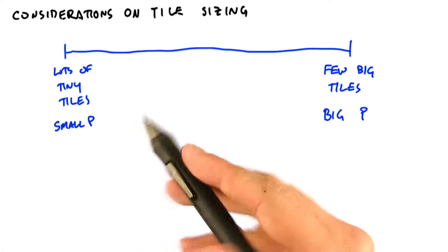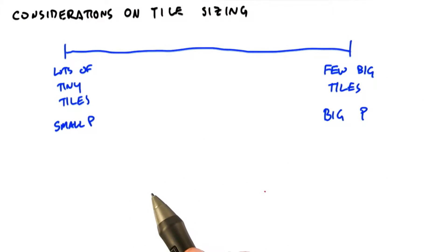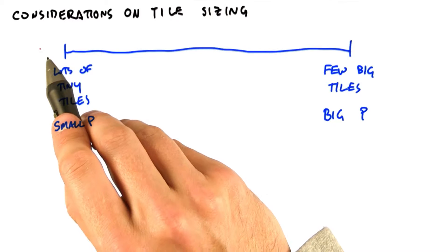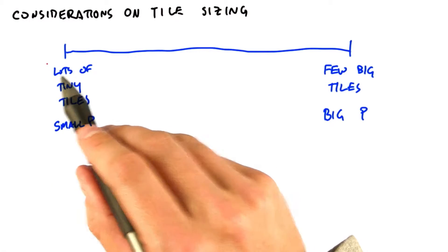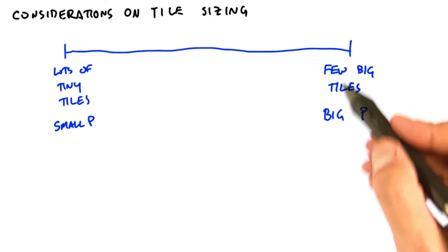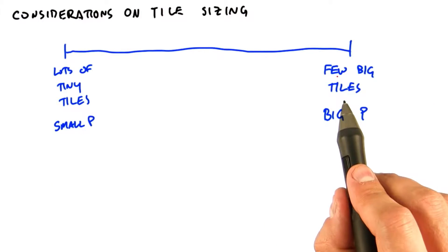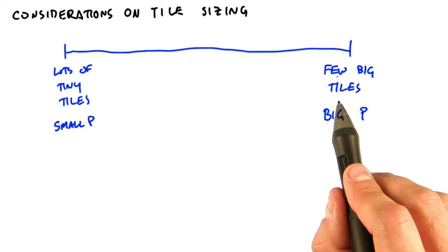In this problem, you need to divide your work up into chunks — in this case, tiles. We have a continuum between tiny tiles, lots of them, and fewer tiles, where each tile is sized to the maximum that can fit in a single thread block.